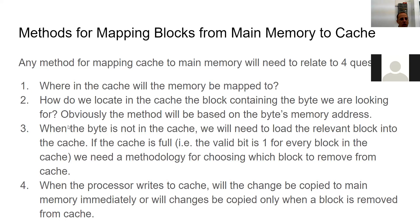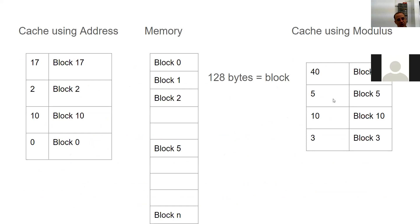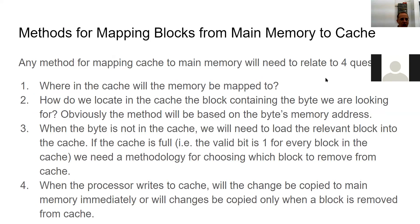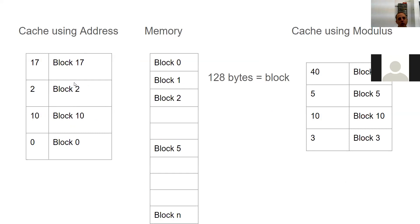When the data byte is not in cache, we need to load the relevant block. If the cache is full, we need a methodology for choosing which block to remove. In direct mapping, every block has an exact location, so there's not much thought involved - we can only remove the one that must go there. Whatever was there before will be removed. But if it's a fully associative method, we can put a block anywhere, so we have to decide which one to remove.